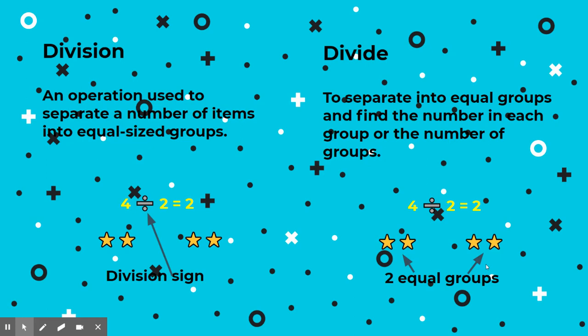First word: division. Division is an operation used to separate the number of items into equal size groups. You'll see I even labeled the division sign, which is two dots with a line in the middle. So 4 divided by 2 equals 2 — I made 4 stars and broke them into two equal groups of 2 each.